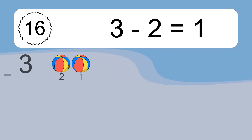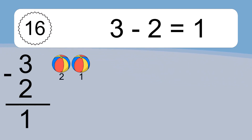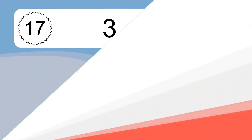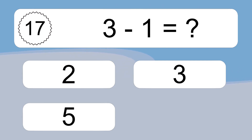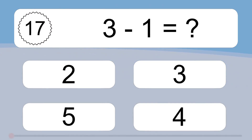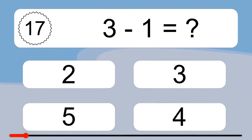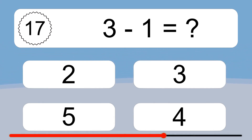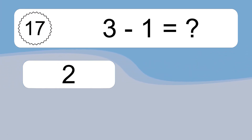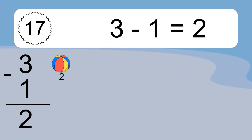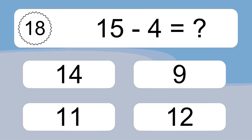3 minus 2 equals 1. Let's count it. 2, 1. 3 minus 1 equals what? 3 minus 1 equals 2. Let's count it. 2.